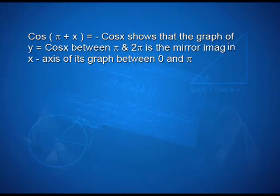To draw the graph of y = cos x in the interval pi/2 to pi, we use the relation cos(pi − x) = −cos x. This shows that the values of cos x between pi/2 and pi are negative, so the graph is below the x-axis there. Also, cos(pi + x) = −cos x shows that the graph between pi and 2 pi is the mirror image in the x-axis of its graph between 0 and pi.